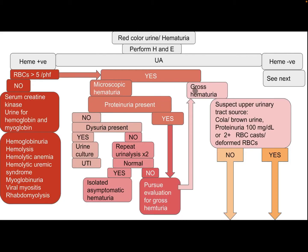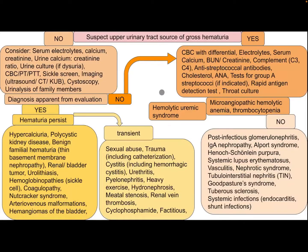For gross hematuria, assess for suspicion of an upper urinary tract source: cola-colored or brown urine, proteinuria greater than 100 mg/dL, 2+ RBC casts, or dysmorphic RBCs. If there is no suspicion of upper urinary tract source, the patient needs serum electrolytes, calcium, creatinine, urine calcium-to-creatinine ratio, urine culture (if dysuria is present), CBC, PT, PTT, sickle screen, imaging (ultrasound, CT, KUB), cystoscopy, and urine analysis of family members.